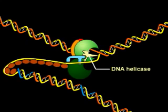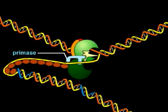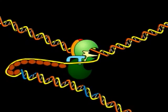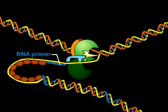As the DNA helicase continues to unwind the parental DNA, the primase becomes activated and synthesizes a short RNA primer on the growing lagging strand.